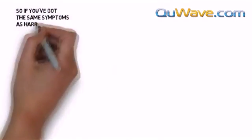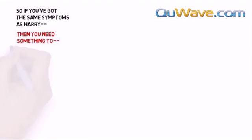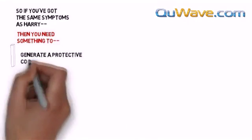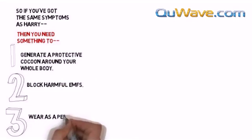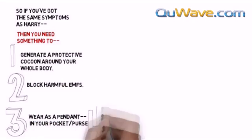So if you've got the same symptoms as Harry, then you need something to: One, generate a protective cocoon around your whole body. Two, block harmful EMFs. Three, wear as a pendant in your pocket or purse.